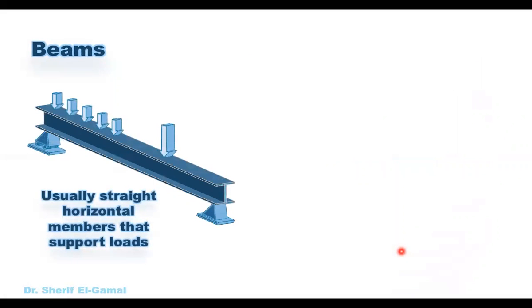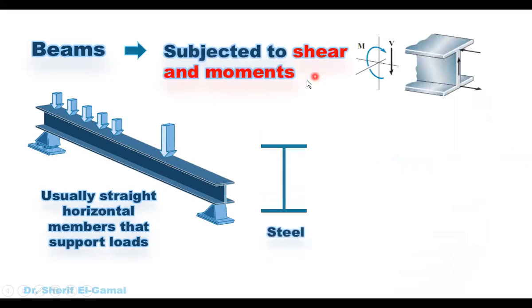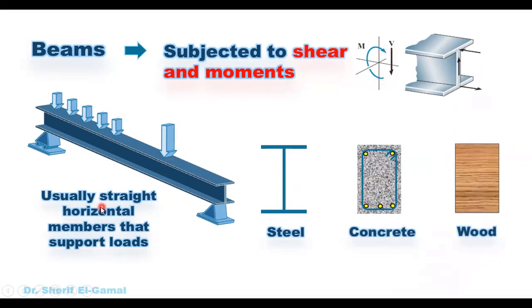The second famous type of structural elements are beams. Beams are usually straight horizontal members that support loads. These loads could be concentrated loads, uniform loads, or even concentrated moments. Beams are subjected to shear and moments. Shear forces are always perpendicular to the direction of the beam, and these shear forces and bending moments result in internal forces or internal stresses in the beam cross section — compression, tension, and shear stresses.